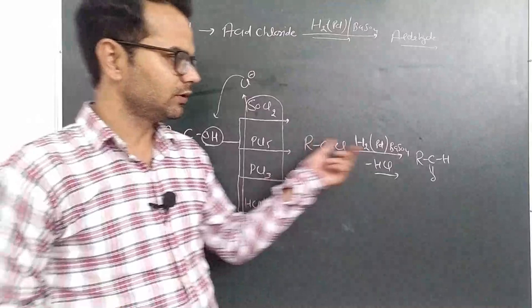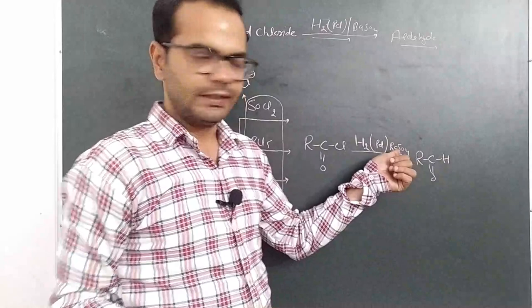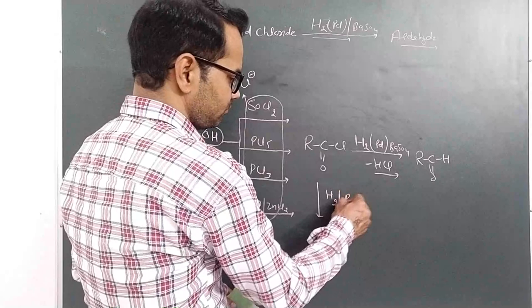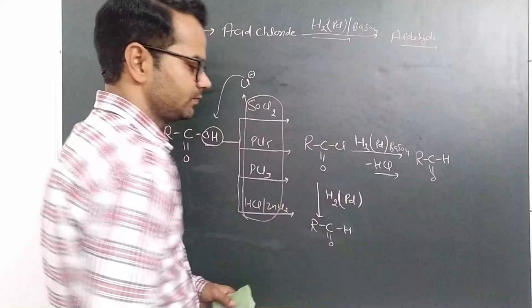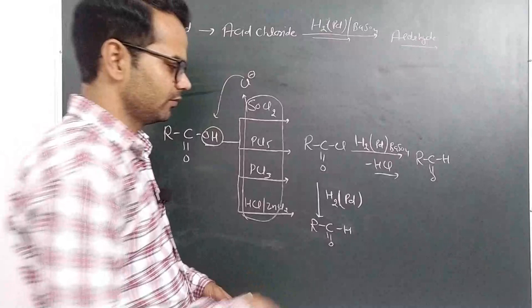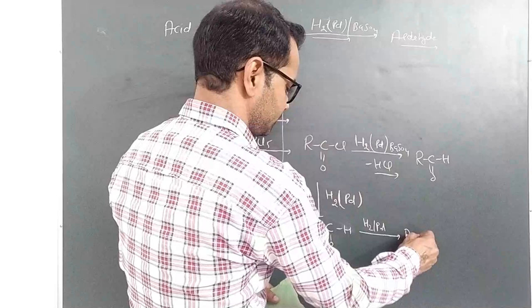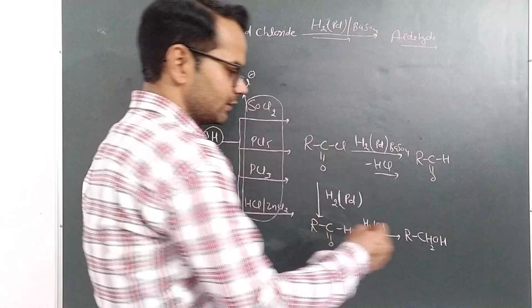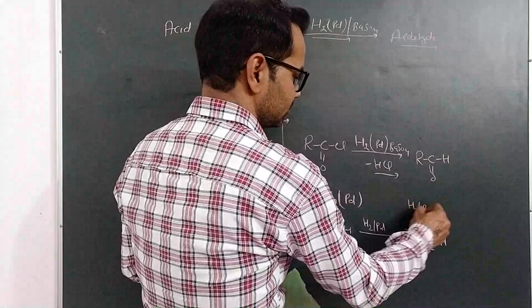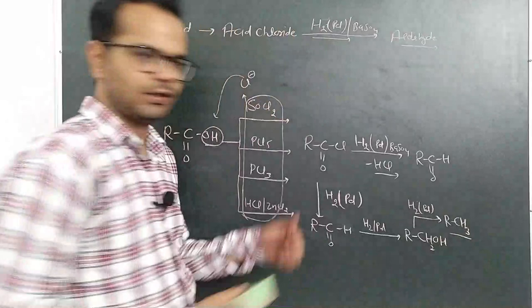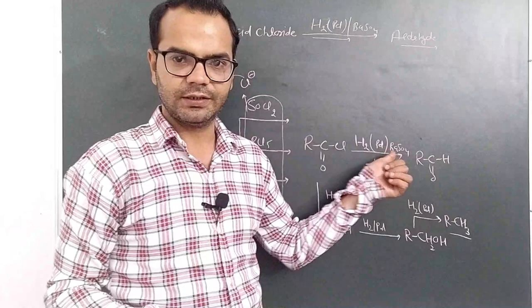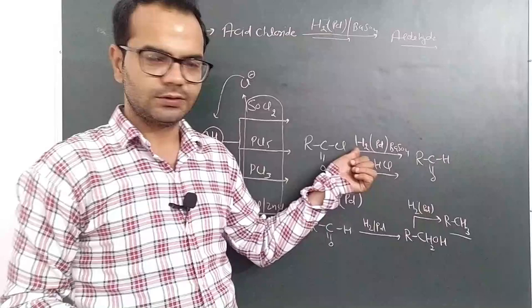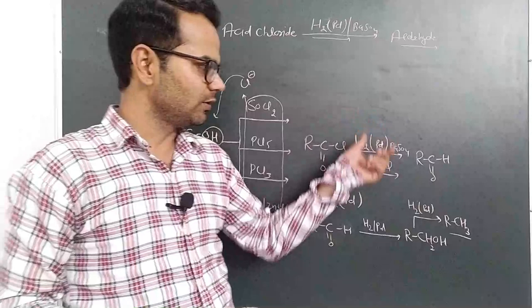If we don't use barium sulfate, then the reaction will first form the aldehyde, which will be further reduced to the corresponding alcohol. If we continue the reaction, the major product will be alkane. That is the important use of barium sulfate in this reaction — to control the reactivity of hydrogen, its reductional power. It is only partial hydrogenation. That's it for Rosenmund Reduction.